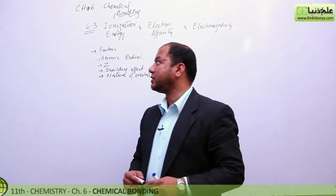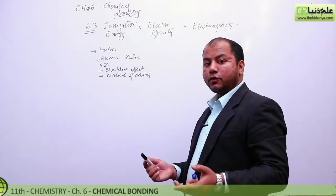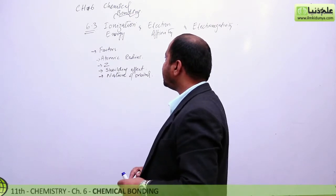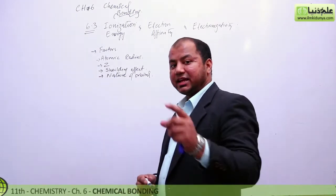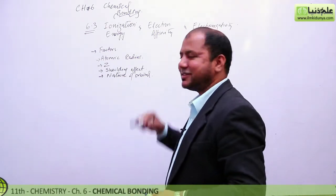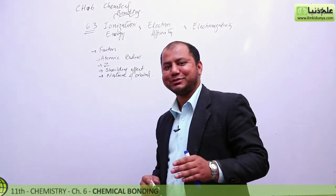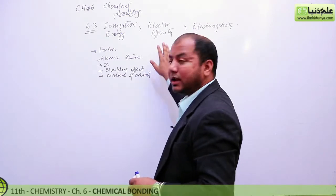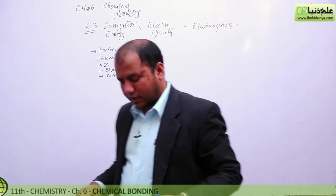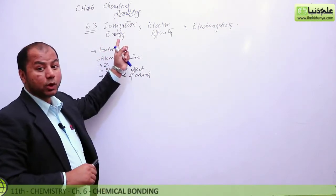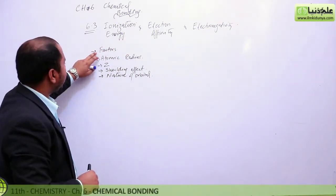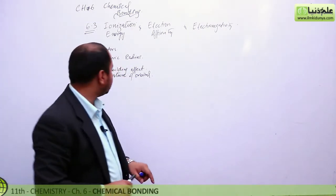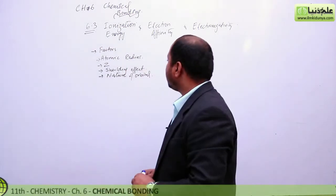Okay guys, here we have another lecture today. We are following chemical bonding, specifically section 6.3. Today we are going to discuss ionization energy — I will let you know what ionization energy is. I'm also going to talk about electron affinity, electronegativity, and the factors which influence ionization energy, such as atomic radius, atomic number, shielding effect, and the nature of orbitals.